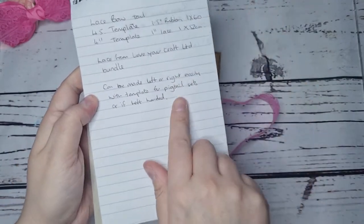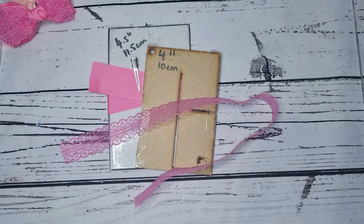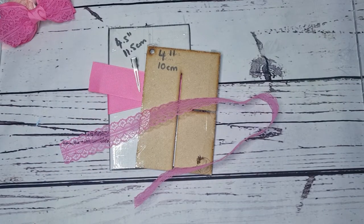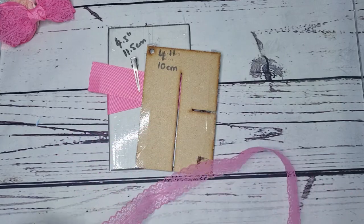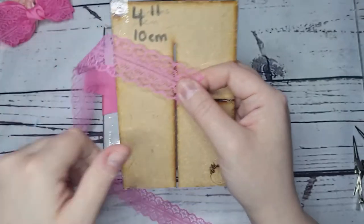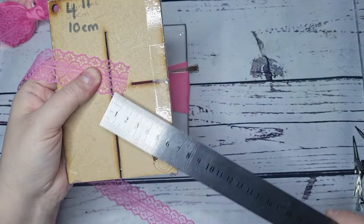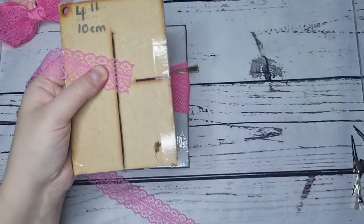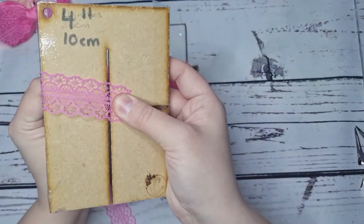You can do this to the left hand or the right hand depending on which is your dominant hand, or if you want to make a pigtail set where the tails are going opposite direction. Take your ribbon and you want to go a centimeter over your stitch guide at a slight angle.